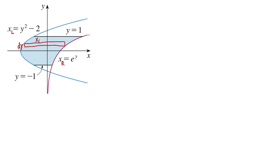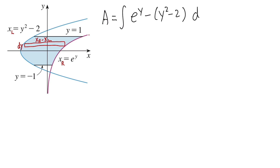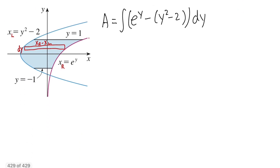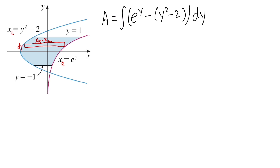The length of the rectangle is xR minus xL — the function on the right minus the function on the left. Here xR is e to the y and xL is y squared minus 2. The area equals the integral of e to the y minus the quantity y squared minus 2. We're in the y world, so y goes from negative 1 to positive 1 — those are the limits of integration.